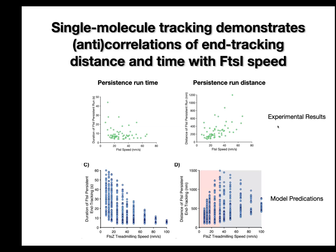The nanopillar experiments are quite difficult to do — the throughput is really low, and those data represent almost half a year of work from Josh. But you can see that the experimental results more or less recapitulate the model predictions, supporting this running ratchet model.